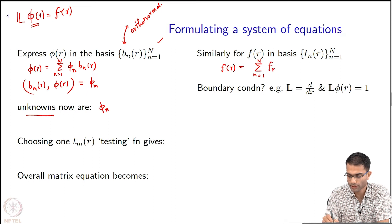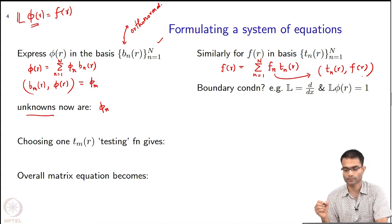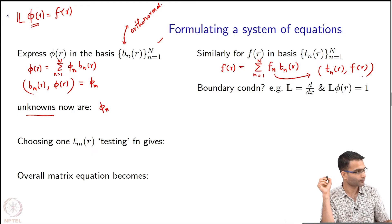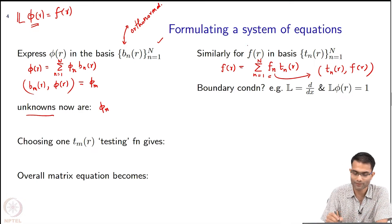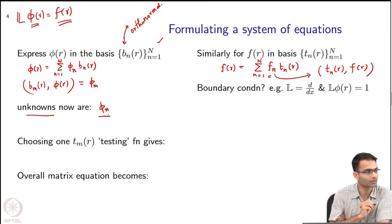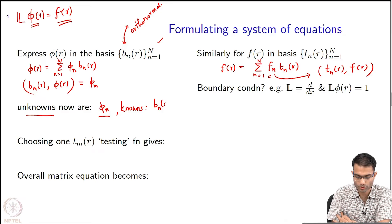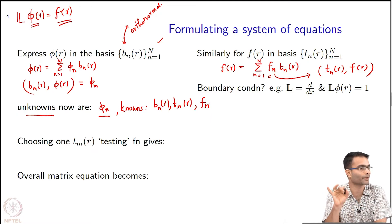I can write f as a sum of f_n t_n(r), and f_n is simply given by the inner product of t_n(r) with f(r). f_n had better be known, because f(r) is known — it is the given right-hand side of the problem. If f is known, then its projection onto any known basis function is also known. So: unknowns are φ_n; knowns are b_n, t_n, and f_n. We should be very clear what is known and what is unknown.